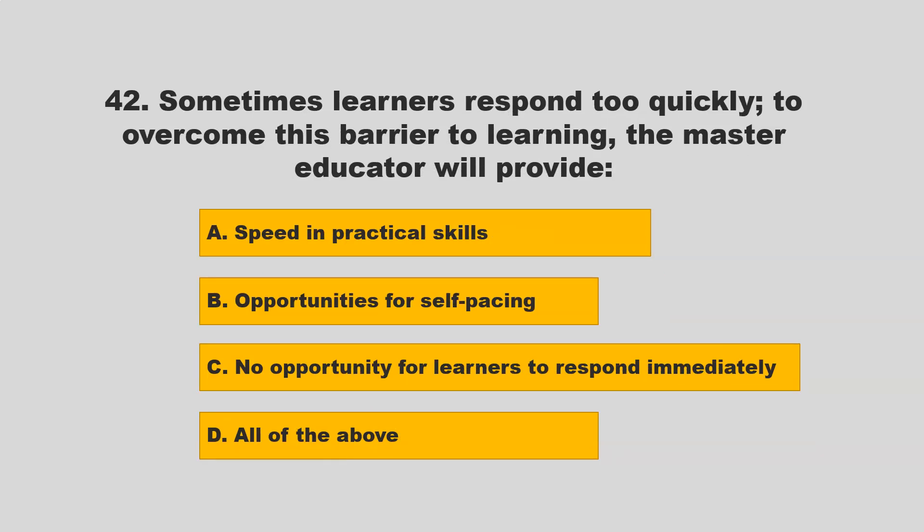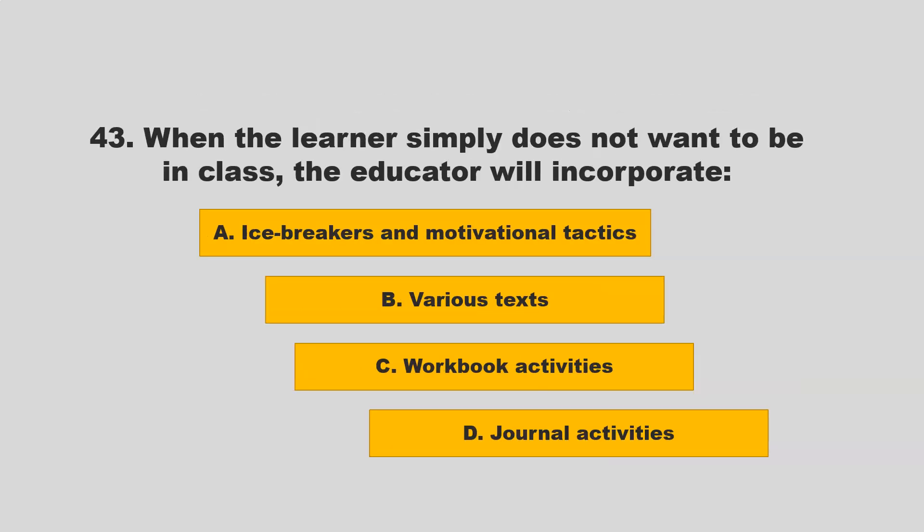Sometimes learners respond too quickly. To overcome this barrier to learning, the master educator will provide: A) speed in practical skills; B) opportunities for self-pacing; C) no opportunity for learners to respond immediately; D) all of the above. If you chose D — all of the above — you are correct.